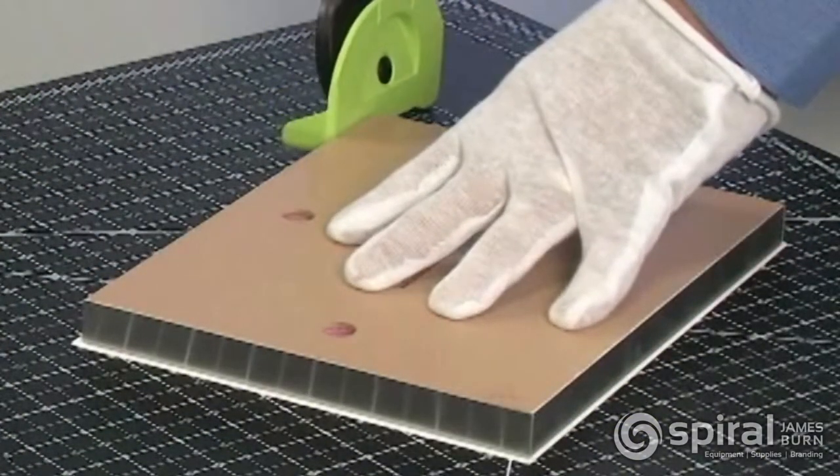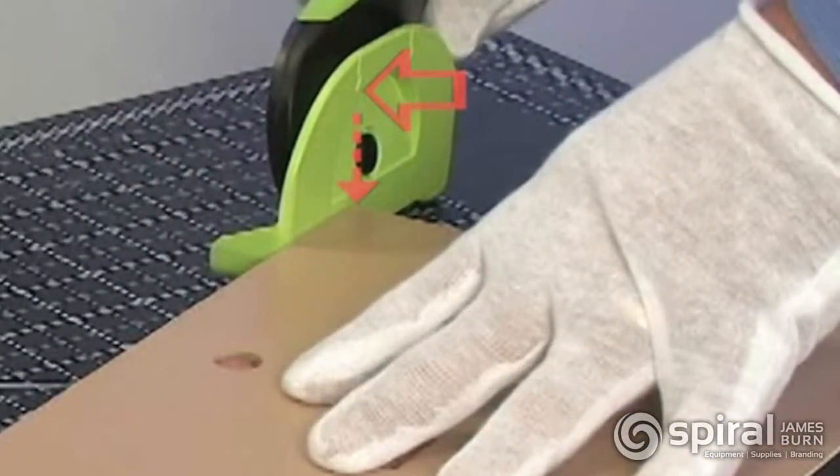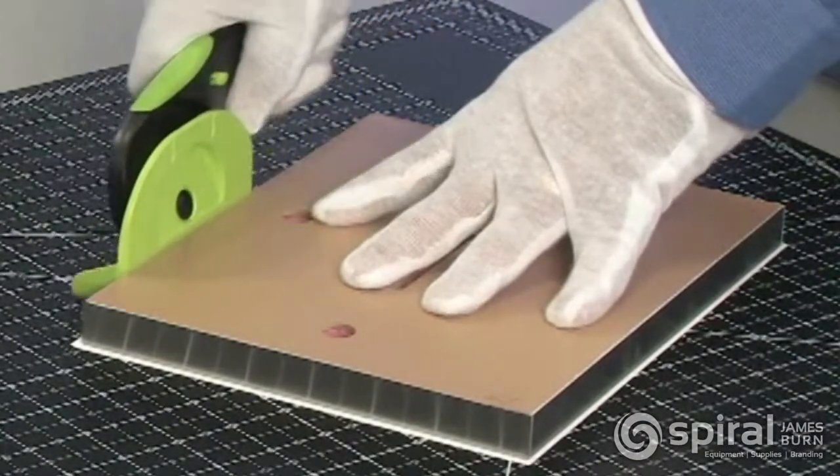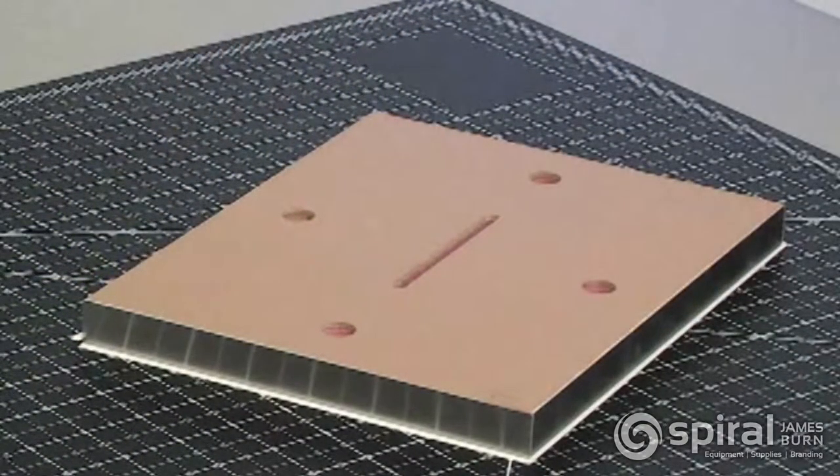Position the cutter on one side of the frame, aligning the arrow on the cutter with the frame corner. Lightly press the side of the blade cover against the frame. Push the cutter along the edge of the frame with firm downward pressure to make the cut.